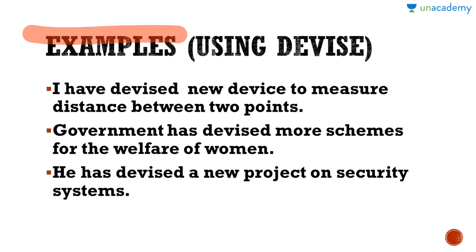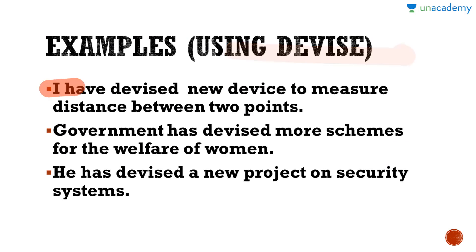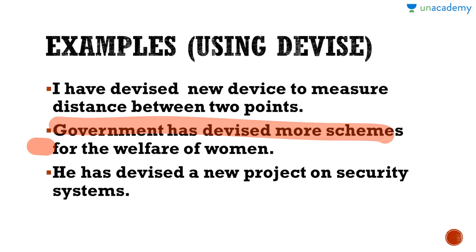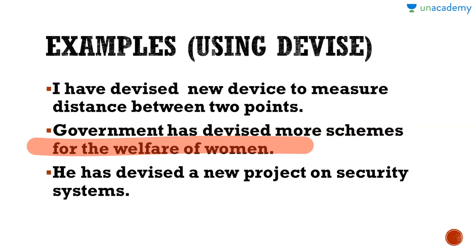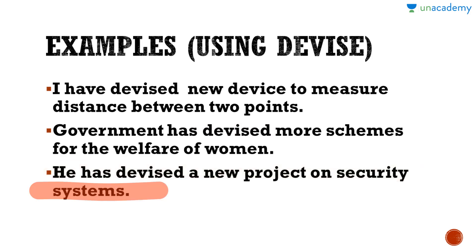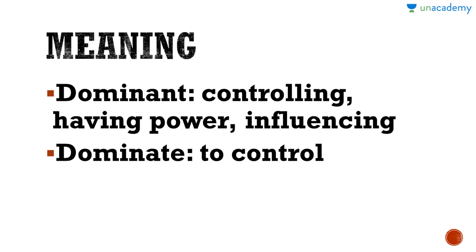Now we will discuss examples using the word DEVISE, which means to create or make something. First: I have devised a new device to measure distance between two points — meaning I have created a new tool to measure distance. Next: the government has devised more schemes for the welfare of women — meaning created more schemes. Last: he has devised a new project on security systems — meaning developed a new project. I hope the difference between both words is clear.